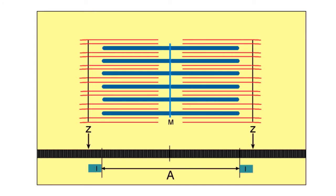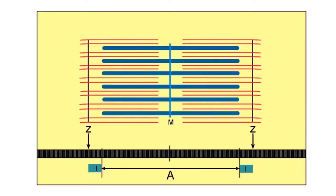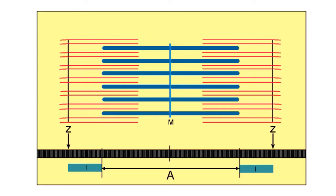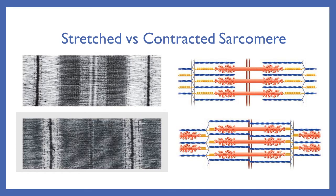Myofilaments contract by drawing the thin filaments with their Z-disc towards the center. Here's a picture of a stretched or relaxed sarcomere on top, and a contracted one below. When they are relaxed, the thick and thin filaments look different under the microscope — thin filaments show up light-colored or white, and thick filaments show up dark.